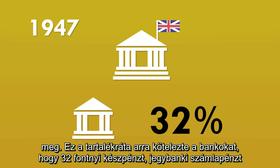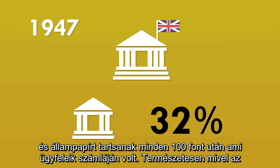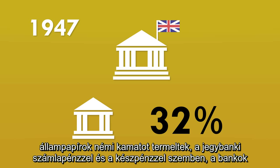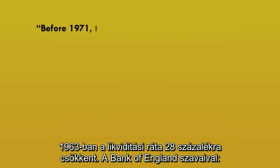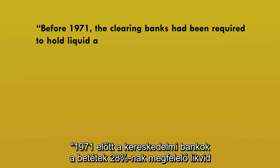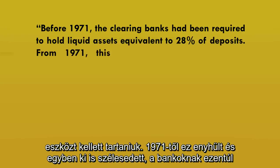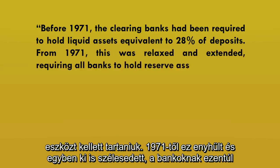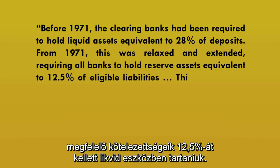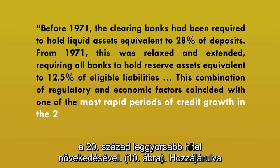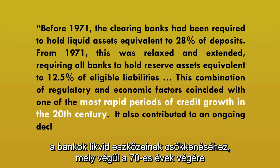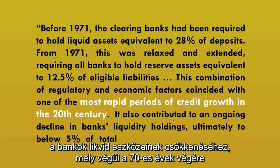This reserve ratio required banks to hold £32 of cash, central bank reserves, and government bonds for every £100 balance in customers' accounts. Because government bonds would earn the banks some interest, unlike reserves and cash, the banks would try to hold as much of this 32% as possible in the form of bonds. In 1963, this liquidity ratio was dropped to 28%. Then, from 1971, this was relaxed and extended, requiring all banks to hold reserve assets equivalent to 12.5% of eligible liabilities. This combination of regulatory and economic factors coincided with one of the most rapid periods of credit growth in the 20th century, contributing to an ongoing decline in banks' liquidity holdings, ultimately to below 5% of total assets by the end of 1970.